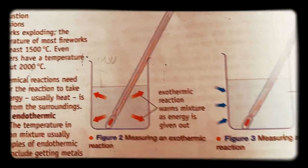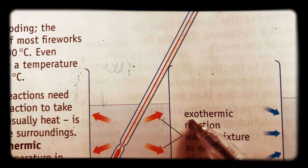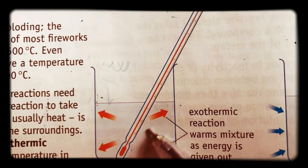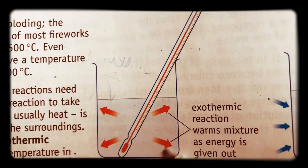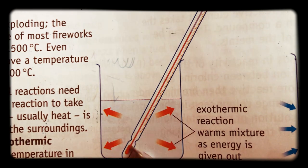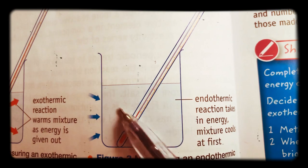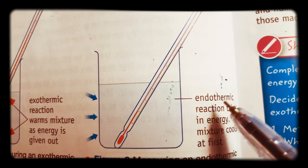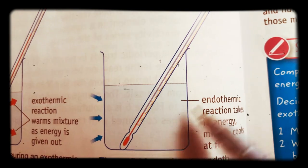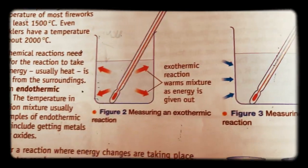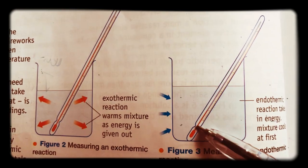There is a useful way of thinking about these terms. 'Exo' means it exits — we're talking about energy exiting the reaction. 'Endo' sounds like 'in' — so it's taking in energy from the surroundings, and that causes a decrease in the temperature reading.